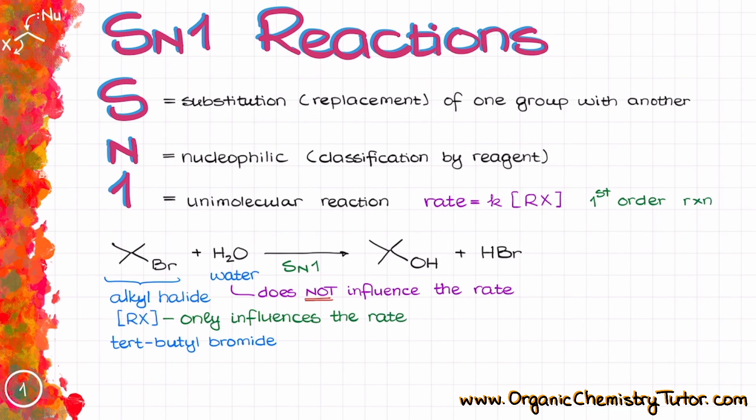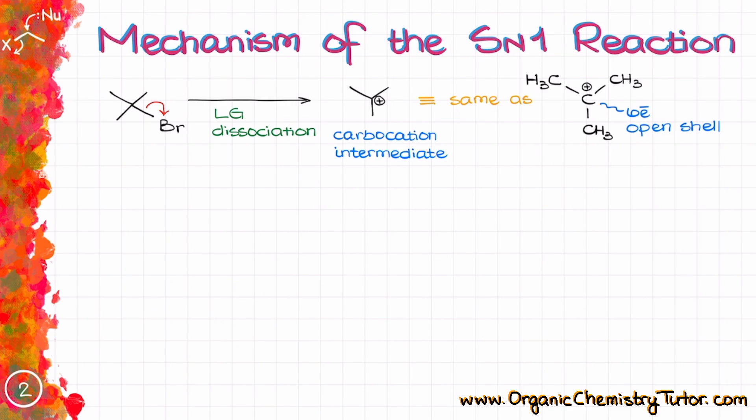So let's look closer at the mechanism of this reaction. The first step in the mechanism of this reaction is going to be the leaving group dissociation, which leads to the formation of the carbocation intermediate. And as we know, the bond breaking is always an endothermic and unfavorable process.